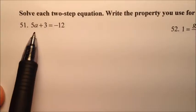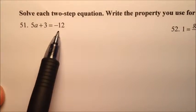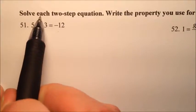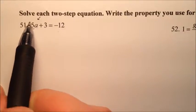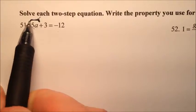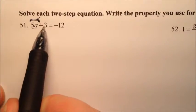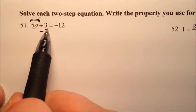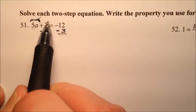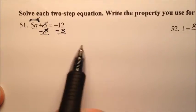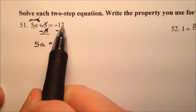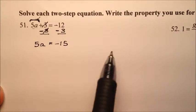Problem 51 is 5a plus 3 equals negative 12. We're trying to isolate the variable a. Since the term with a is 5a, we want to get rid of the other term by subtracting 3 from both sides. That cancels the 3s and leaves us with 5a equal to negative 12 minus 3, which is negative 15.